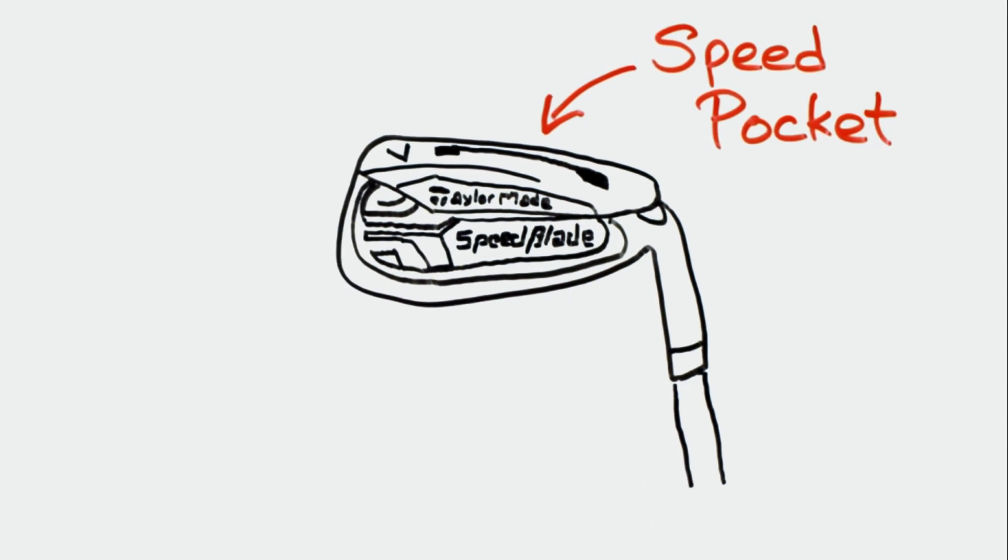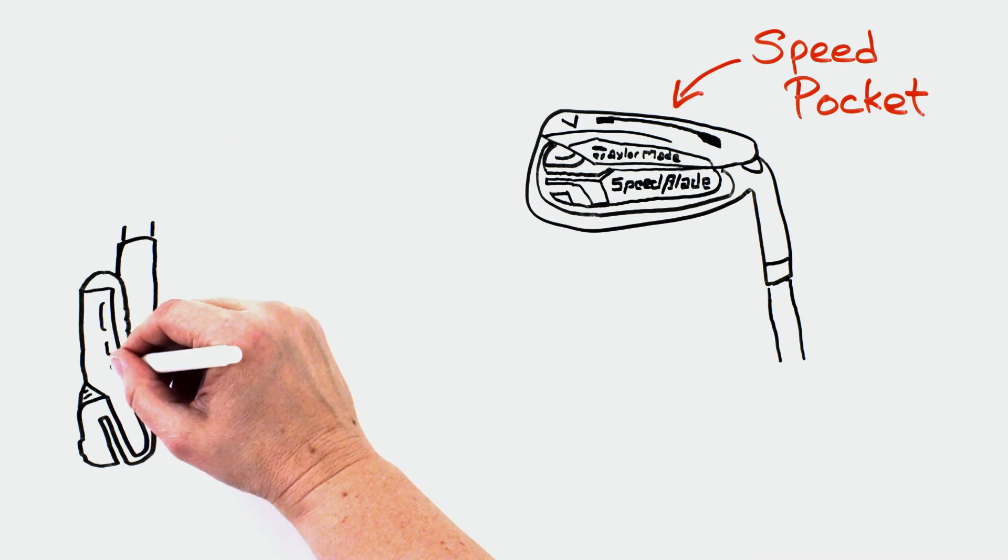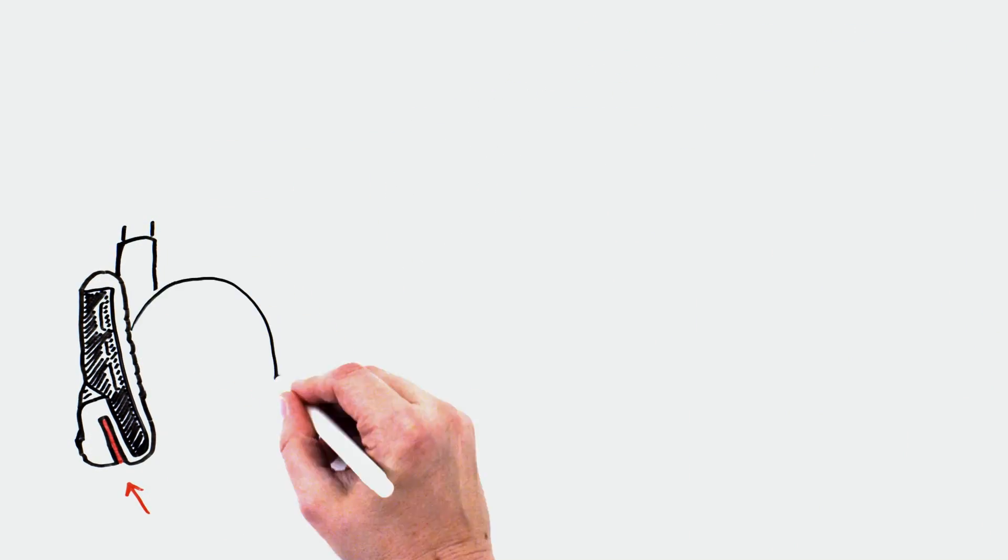What is the speed pocket, you ask? Well, it's the slot that runs behind the club face. Now, at impact,